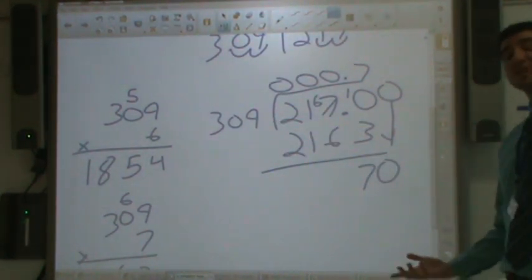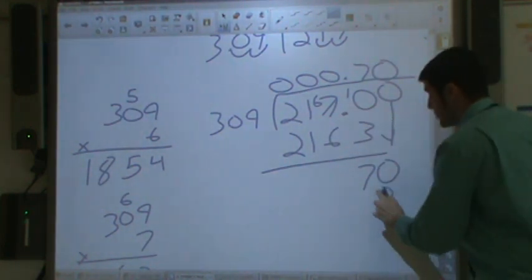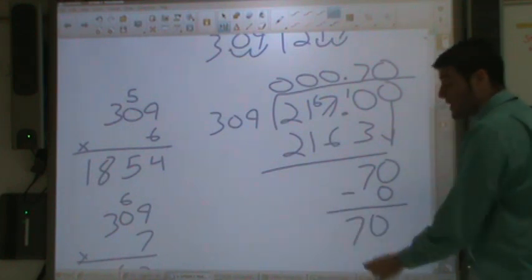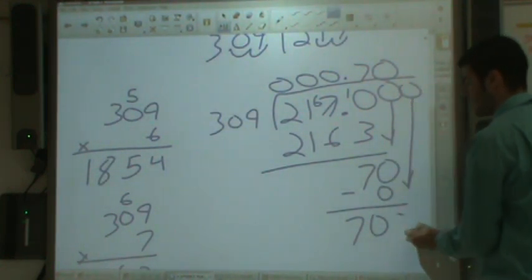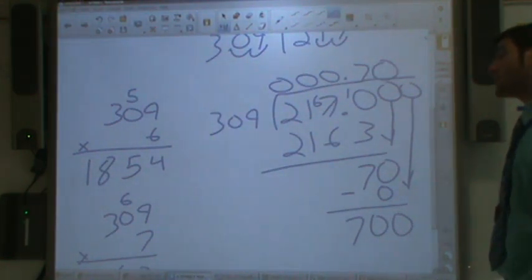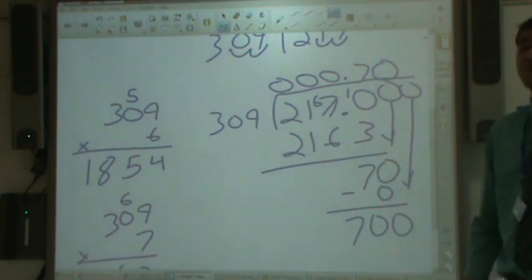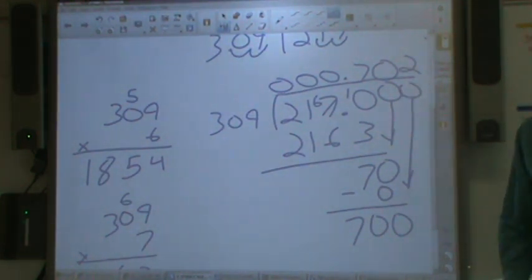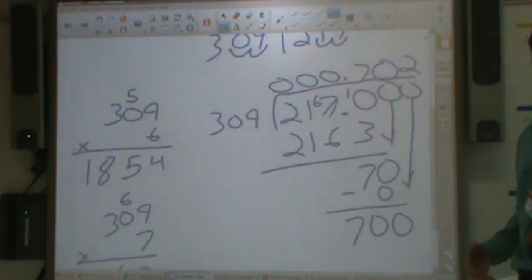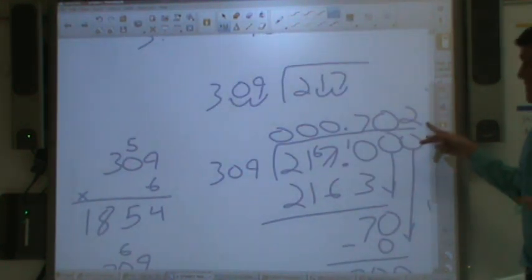309 goes into 70 zero times. Zero times 309 is zero. 70 minus zero is 70, then we bring down another zero. How many times does 309 go into 700? 309 goes into 700 two times. So we have 0.702. I'm going to stop the division. Obviously, I could continue if I wanted to, but I'm going to stop right now.